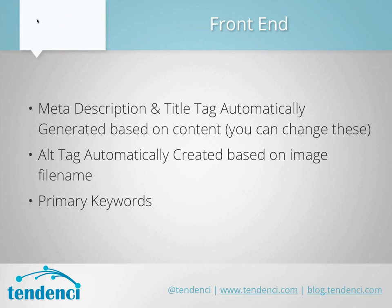On the front end, Tendency does several things automatically. It creates a meta description and title tag automatically based on the content within a page. So if you create a page with a title, Tendency is smart enough to say this is the title tag and create that automatically. It also creates alt tags — tags that tell search engines about an image, since they can't see what's in the image. It creates an alt tag based on the image's file name, which can be helpful or not if the file name is something generic like 'image24386'.